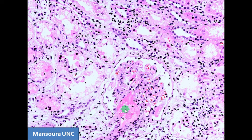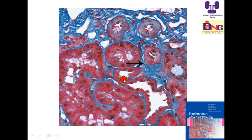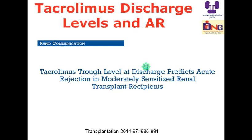Chronic calcineurin inhibitor nephrotoxicity presents with ionization of the tubules, vascular changes, and stripe fibrosis visible on trichrome stain. To summarize: acute calcineurin inhibitor nephrotoxicity shows vacuolization of tubules, while chronic nephrotoxicity shows vasculopathy and stripe fibrosis.